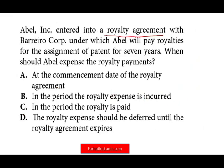The next question: Able enters into a royalty agreement with B company under which Able will pay royalty with the assignment of a patent for seven years. When should Able expense the royalty payment? Do you recognize expenses at the commencement date? No. Should the royalty expense be deferred until the royalty agreement expires — wait until year seven? No. Do we recognize expenses when we pay them? No, we are using accrual. The answer is: in the period the royalty expense is incurred. We recognize expenses when incurred.